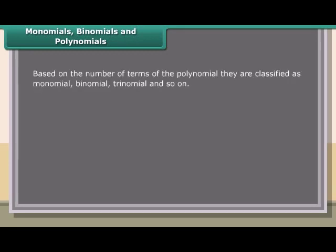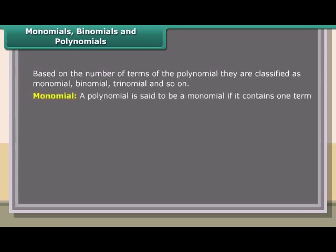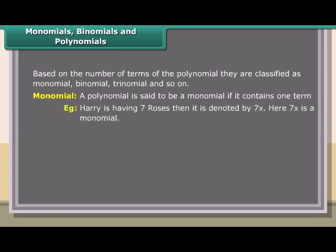Monomials, Binomials, and Polynomials. Based on the number of terms, polynomials are classified as monomial, binomial, trinomial, and so on. A polynomial is said to be a monomial if it contains one term. Example: Harry is having seven roses, denoted by 7x. Here 7x is a monomial.